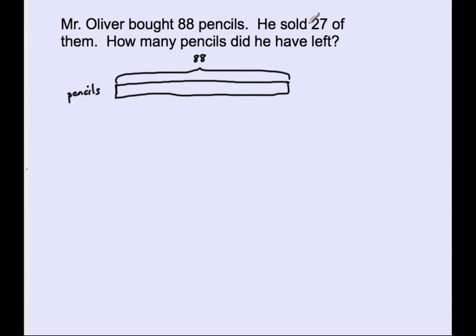It says he sold 27 of them. 27 of these 88 pencils that he has. So therefore I will draw a line here, and from here to here will represent 27. So I'll draw a brace that goes from here to here and it'll represent 27 of the pencils, and that represents what he sold.